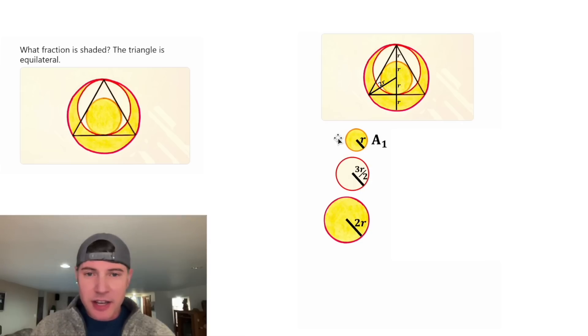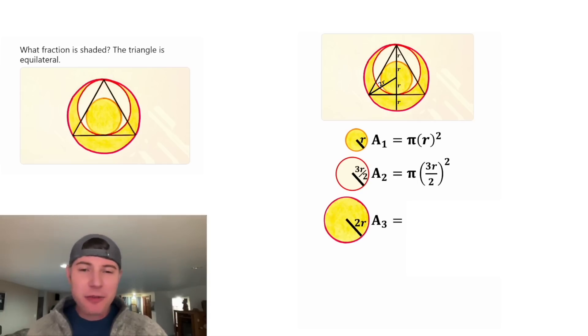Let's call the areas of these circles a sub 1, a sub 2, and a sub 3. For a sub 1, it would be equal to π r². For a sub 2, it would be equal to π times the quantity 3r over 2 squared. And the area of a₃ is equal to π times the quantity 2r squared.